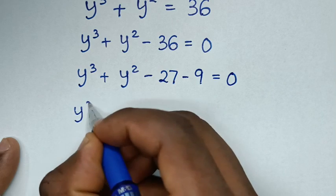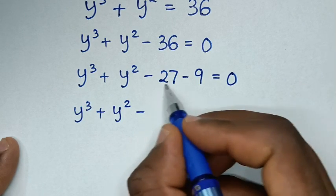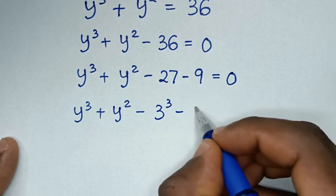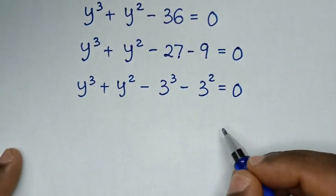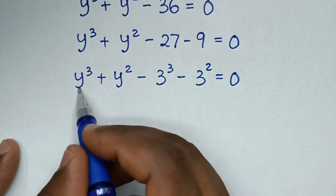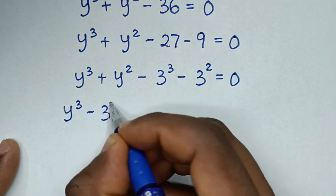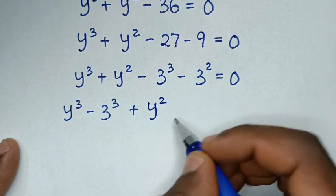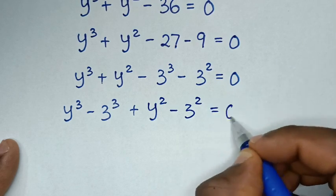Then it will be y cubed plus y squared minus 27 — which is 3 cubed — minus 9 — which is 3 squared — is equal to 0. We then place terms with like powers together: y cubed minus 3 cubed, plus y squared minus 3 squared, is equal to 0.